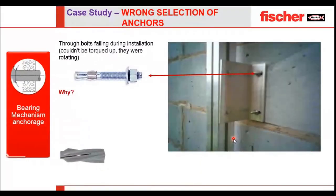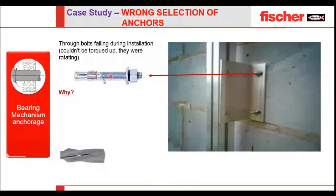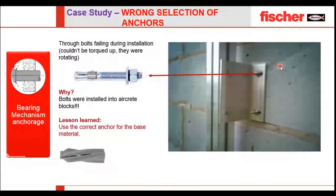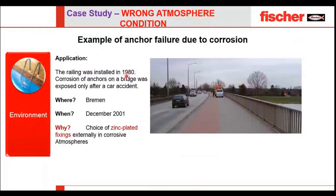The next case is wrong anchor selection. In the Middle East, we commonly use super-X blocks or aerated blocks — lightweight blocks. Unfortunately, a metal expansion anchor was used in these blocks, which doesn't work due to the lightweight nature of the material. The bolt was installed in the aircrete block, which was not a suitable solution. After some time the block became porous and the anchor came out. The best solution is a GB anchor or an SPX anchor for fixing into aerated or AAC blocks — expansion anchors are not at all recommended for these materials.